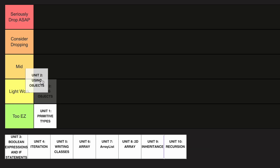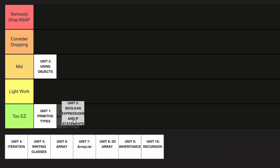Unit 2, Using Objects, is a little bit more confusing, and I'm going to put that in the Mid category. But Unit 3 is in the Too Easy category — it's basic true and false stuff, so it's pretty easy, as well as if statements. Super easy.